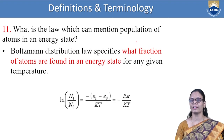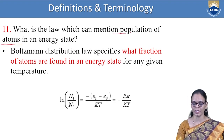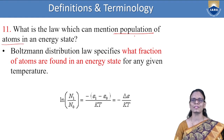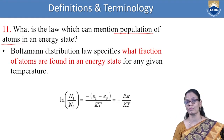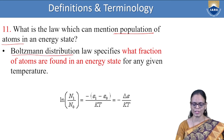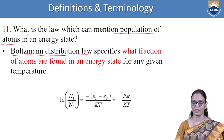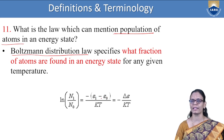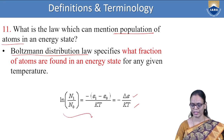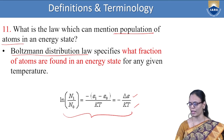Which law mentions the population of atoms in an energy state? The Boltzmann distribution law specifies what fraction of atoms are found in a particular energy state, and it is given by: ln(N₁/N₀) = −(E₁ − E₀)/kT, or equivalently −ΔE/kT. This relation gives us what fraction of atoms are found in a given energy state.